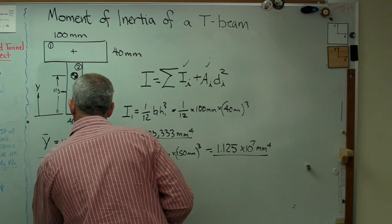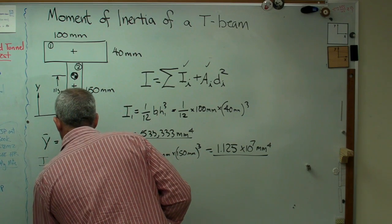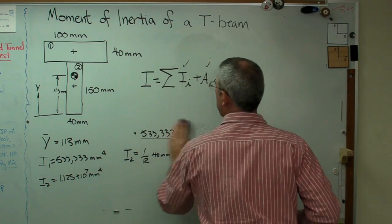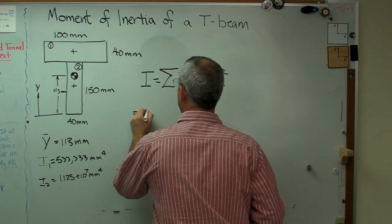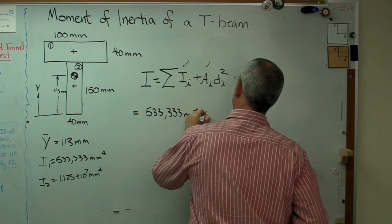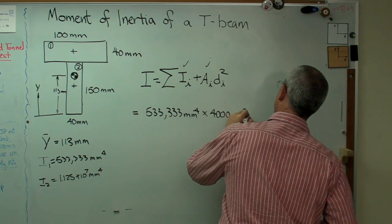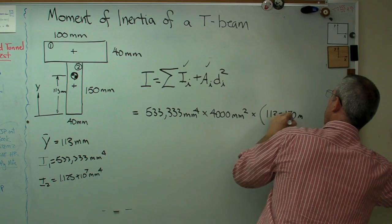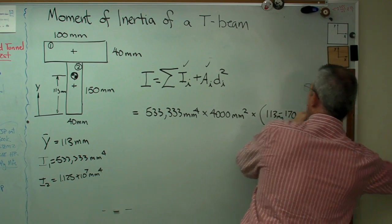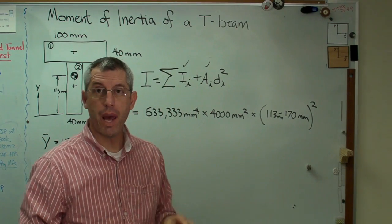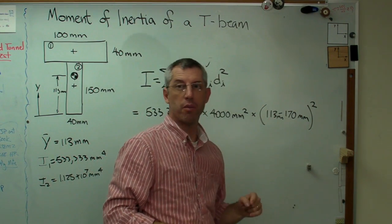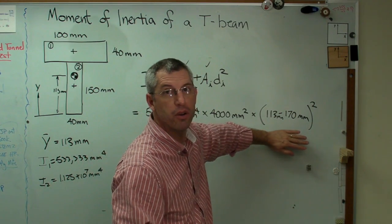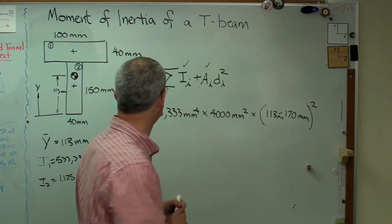533,333 and 1.125 times 10 to the seventh. Got all our intermediate results here. Let's bring it on home. This is going to be 533,333 millimeters to the fourth times 4,000 millimeters squared times 113 minus 170, and that's squared. Now, an interesting part about what's in the parentheses right there doesn't matter whether I write it in this way or reverse the two numbers. It doesn't matter whether it's positive or negative. And the reason is that we're going to square it. It's going to be positive when we're done anyway. This is the only time ever in your life you're going to be able to not care about signs. This is the one place. So there's box one.